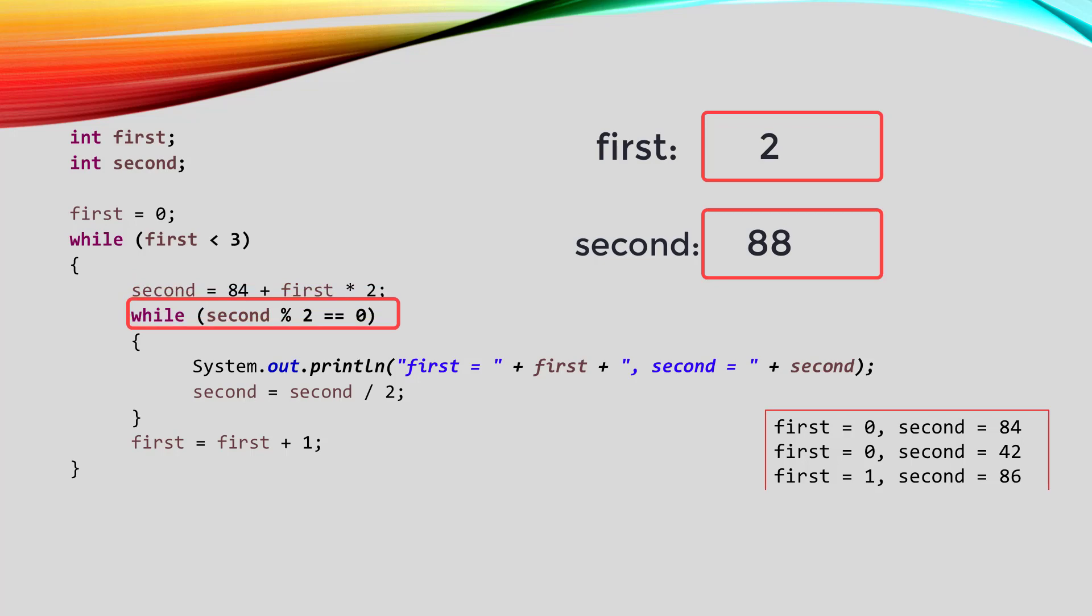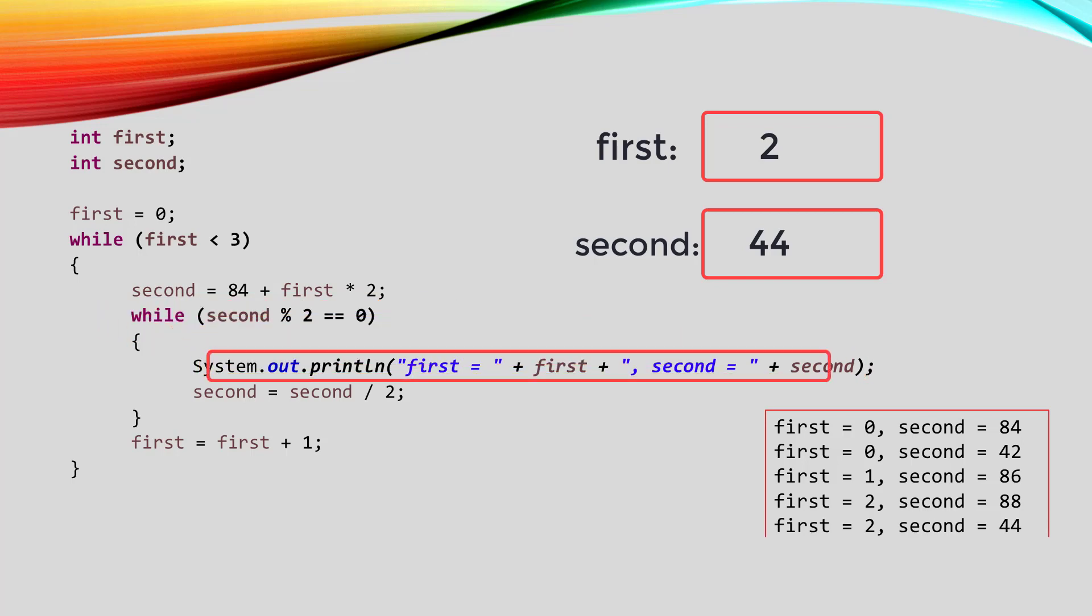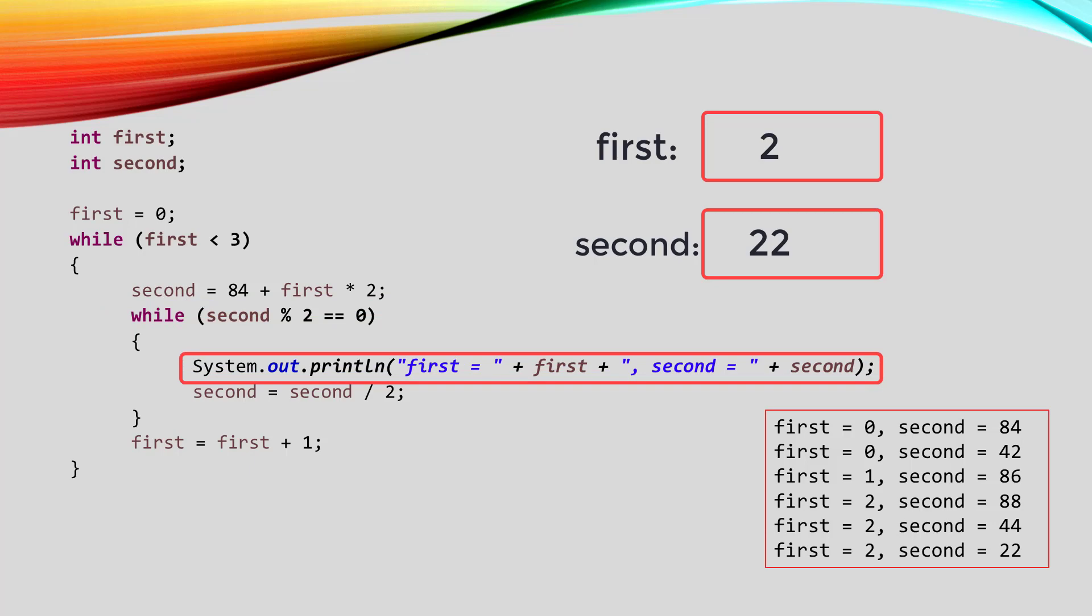Then the inner loop starts, and second is even, so we go into the loop, and this is the output that we see. Then second becomes 44. We go back up to the top of that loop, and it is still even, so this is the output that we see. Then second becomes 22. We go back up to the top of the loop, and it is still even, so this is the output that we see. Second becomes 11.